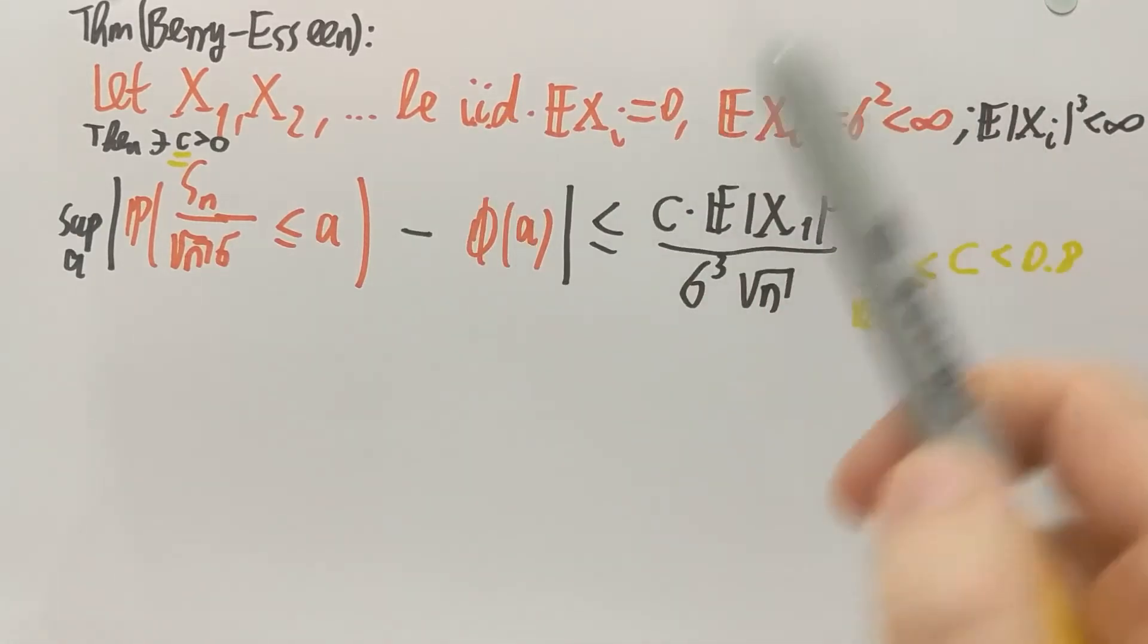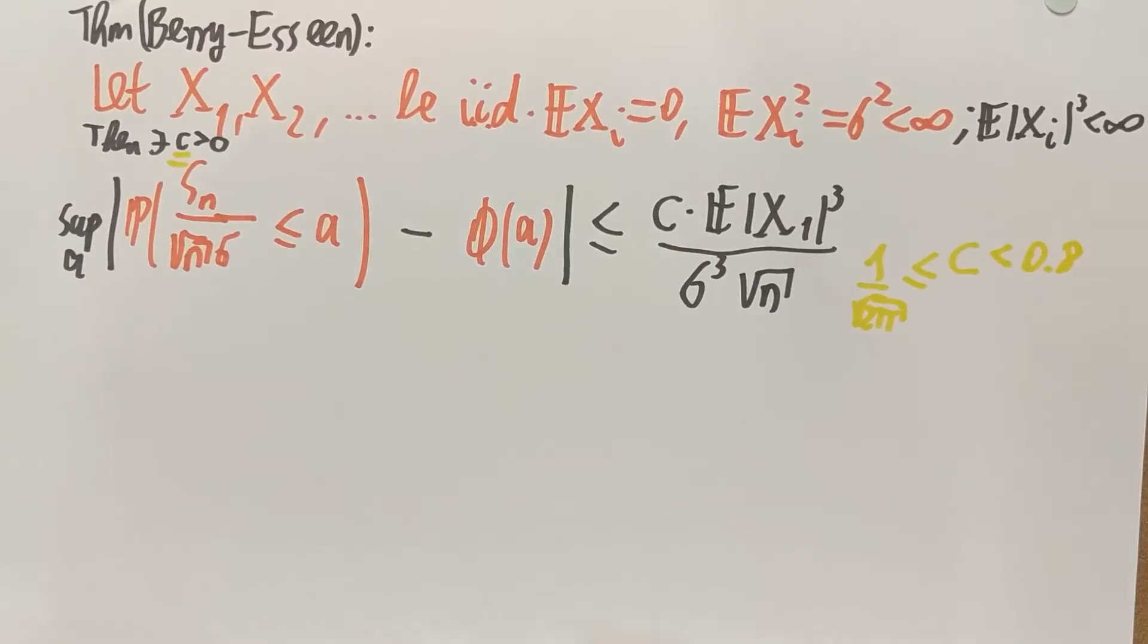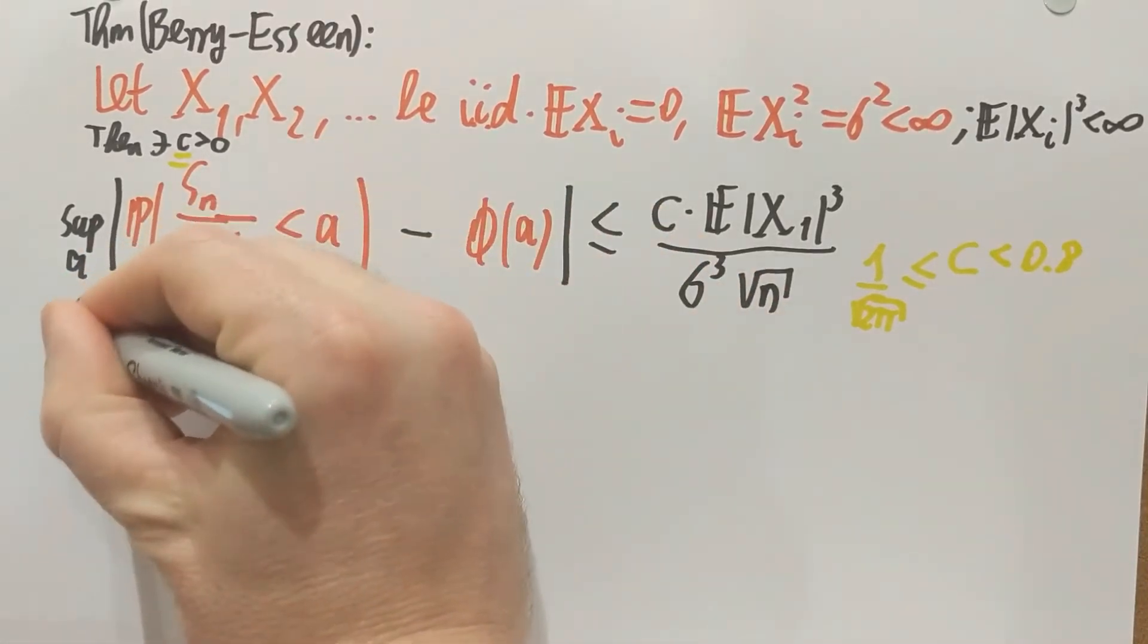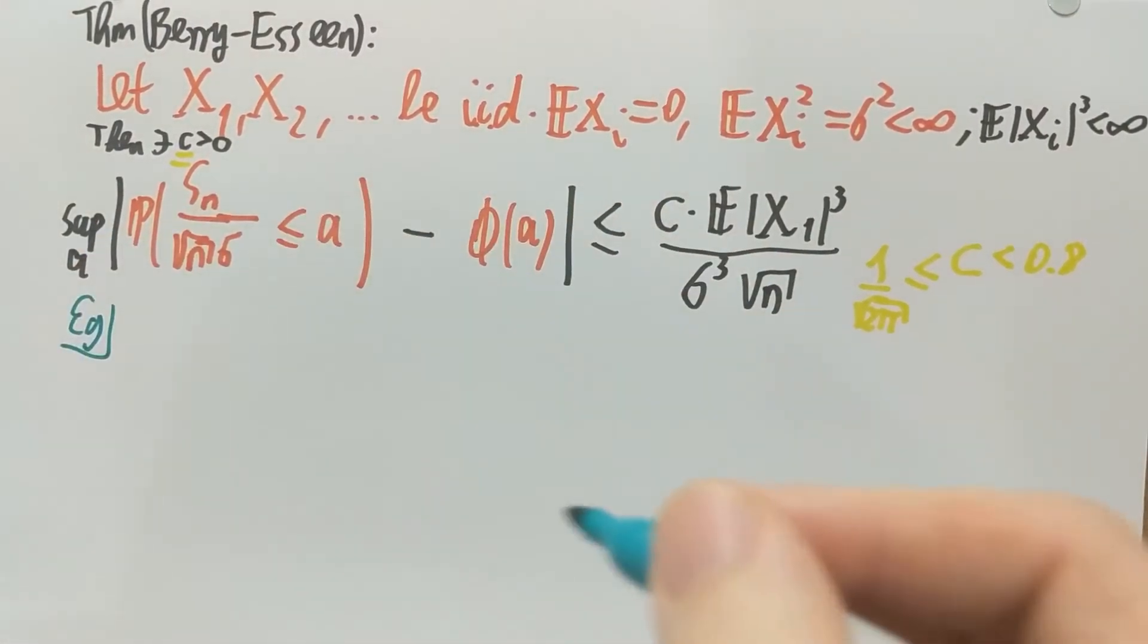If we have a finite third moment, then there is a bound on the difference between this kind of normalized probability and the limiting standard normal distribution function in terms of the third moment of the variables. I'd like to show you an example to see how sharp these bounds are. This is a very general theorem. It works for every distribution, and as such, it's not expected to be particularly sharp.